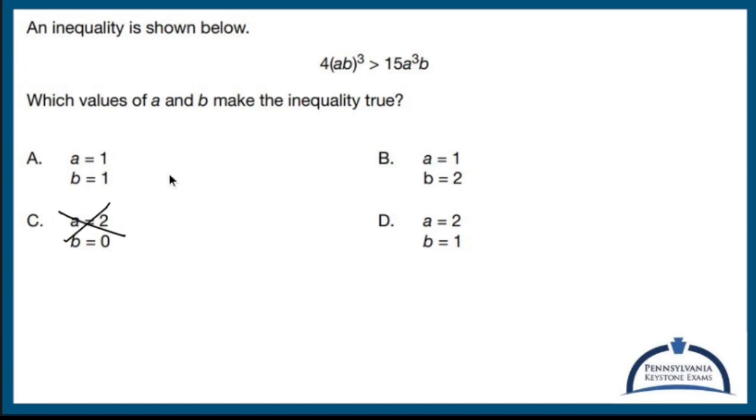So let me try this. I'm not going to try the ones, not yet, because in my head I could do one times one, which is one, one cubed. I get four and four is not going to be greater than 15 times one cubed times one. So I already know that A is out because I just did it quickly in my head.